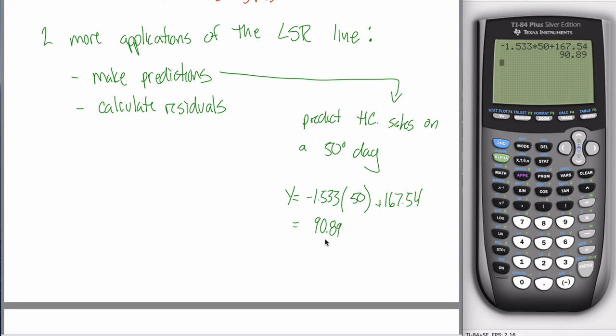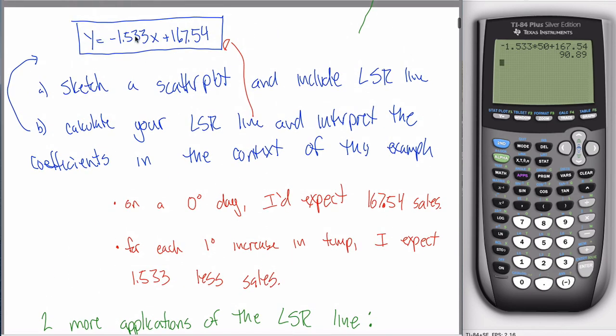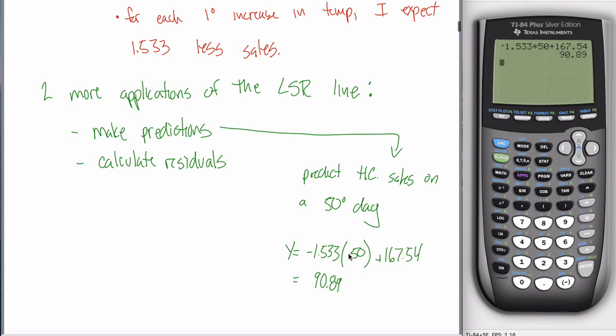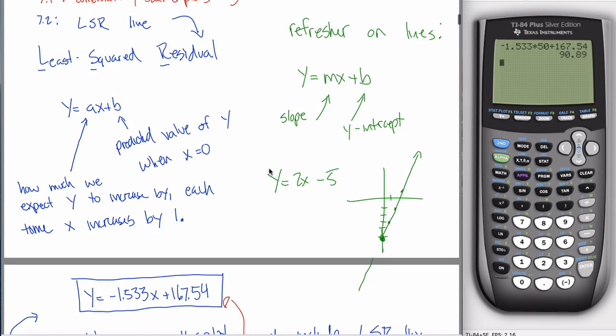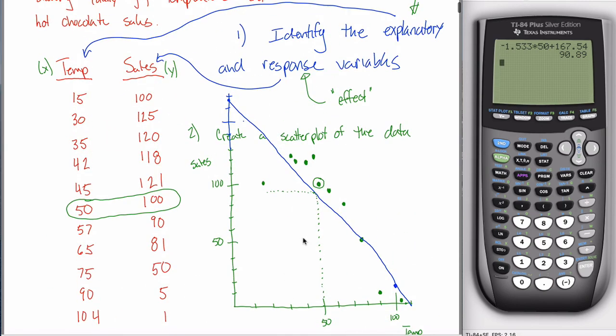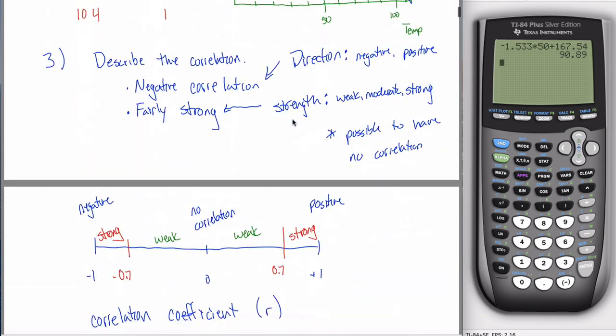So if I hit quit to make this back to a regular calculator, negative 1.533 times 50 plus 167.54, I hit enter and it spits out this number, 90.89. What that's saying is the height of the line that is given by this equation, when the X value is 50, is equal to 90.89. In other words, when I was trying to ballpark the height here, if I kept going over, my graph is pretty good. It's just slightly bigger than 90, the height of this line when X equals 50 is 90.89.